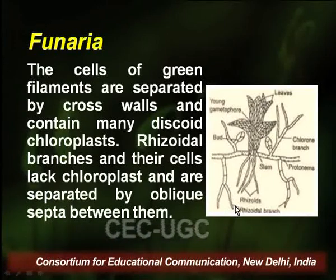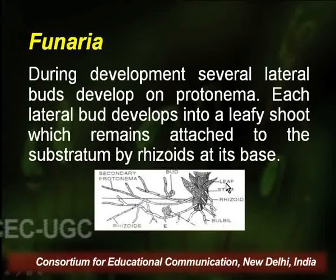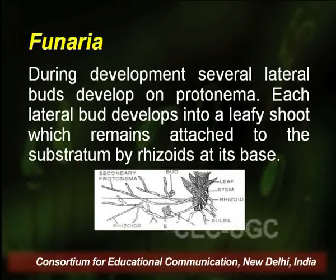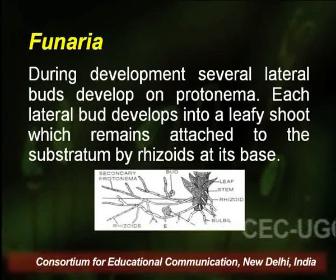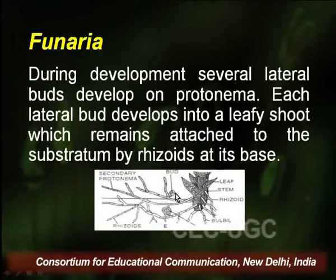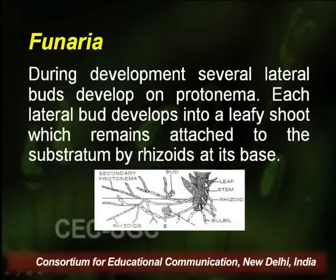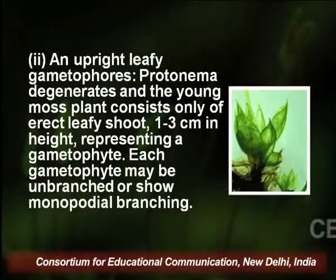In rhizoidal branches we can observe oblique septa. During development, several lateral buds develop on the protonema, and each lateral bud develops into a leafy shoot which remains attached to the substratum by rhizoids at its base. These bud-like structures eventually develop into leafy shoots, remaining attached to the substratum, with rhizoids providing anchorage to the whole gametophyte.